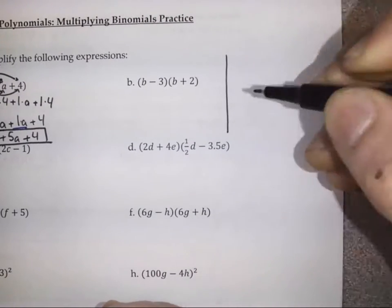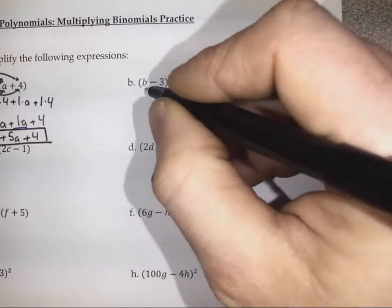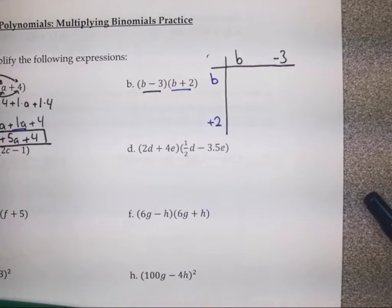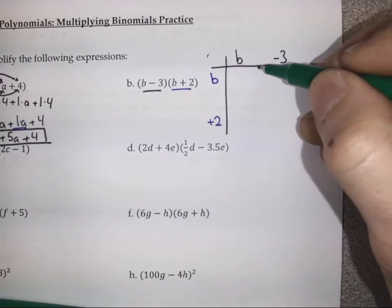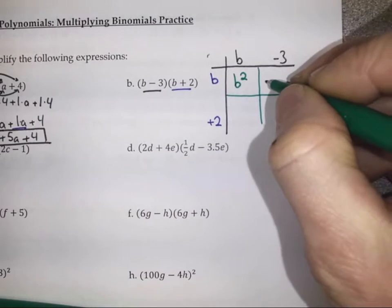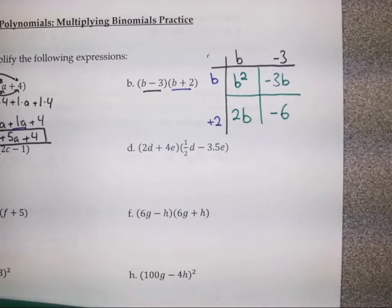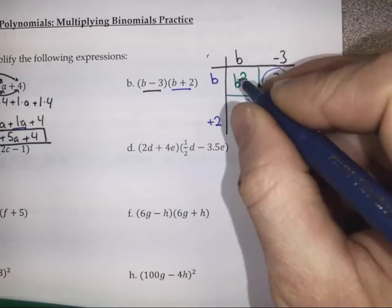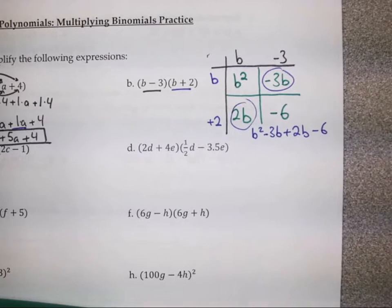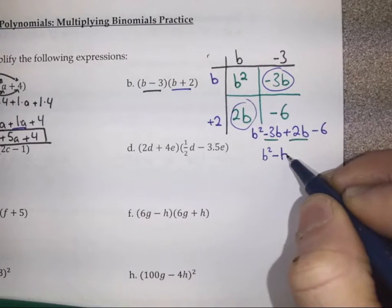For B, I'm going to try a table. So here we just take each of these terms — we'll have a B and a negative 3, and I'll put a B here and a positive 2. This is going to give me four different terms: the product of B times B, which is B squared; the product of B times negative 3, that's negative 3B; the product of 2 times B, that's 2B; and the product of 2 times negative 3 is negative 6. When we write all of those terms out, it's going to look like B squared minus 3B plus 2B minus 6. Grouping those together gives us B squared, and negative 3B plus 2B gives us negative B minus 6.